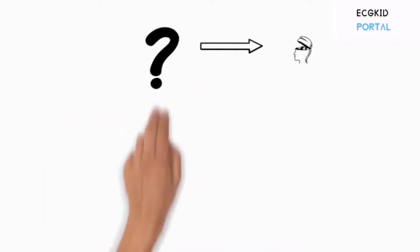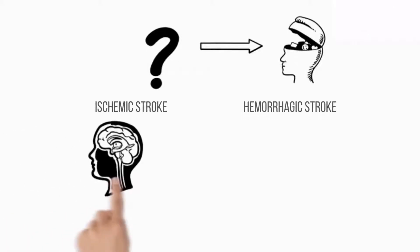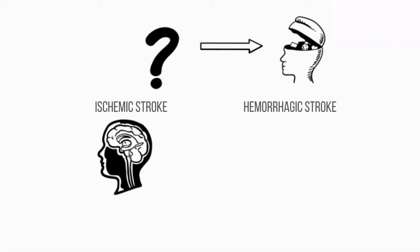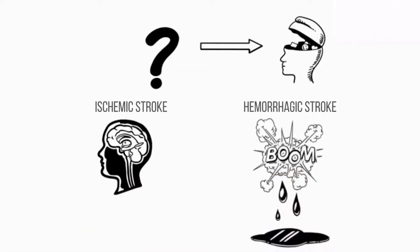But what causes stroke in the first place? There are mainly two causes of stroke: first, a blocked artery causing an ischemic stroke, or a leaking or bursting of a blood vessel causing a hemorrhagic stroke.